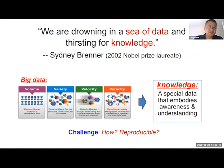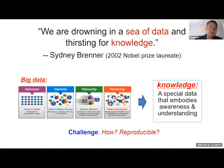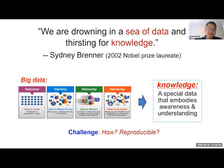I want to quote Sydney Brenner's saying first: we are drowning in a sea of data and thirsting for knowledge. Basically, knowledge is a special kind of data which embodies awareness and understanding. Now we are in the era of big data—data has high volume, it's heterogeneous, and it's generated at very fast speed. Data uncertainty is also an issue. So how can we really go from data to knowledge? How can the work be reproducible and how can we face this challenge?